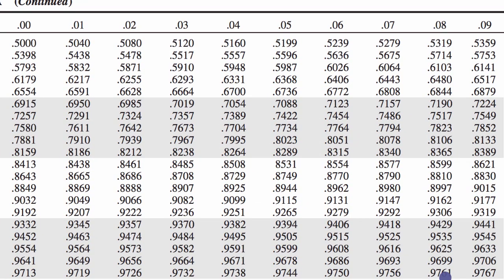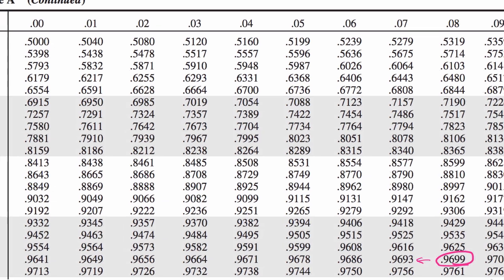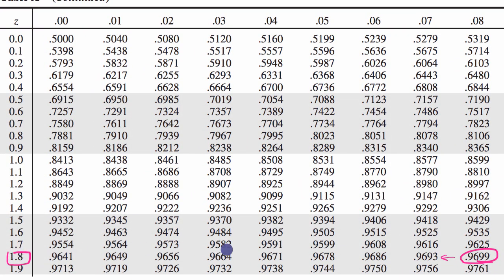97% looks like it is right about here. That looks like the closest number. This is 6 ten-thousandths above it, this is only 1 ten-thousandth below it. You would look at the row first. If we look at the row, it is 1.88 is our z.